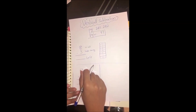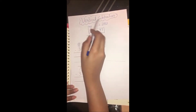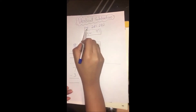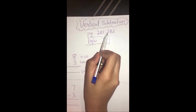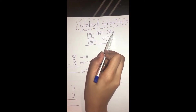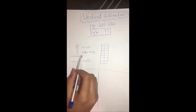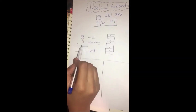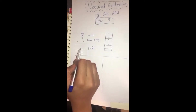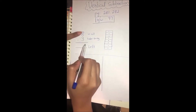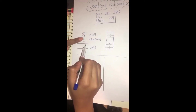Hello KG3, how are you today? The lesson is going to be vertical subtraction. Open page 281 and then 282. The homework is going to be page 97. Now this is the vertical subtraction.